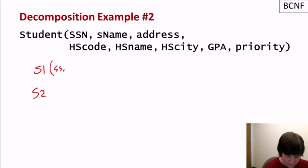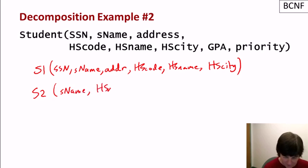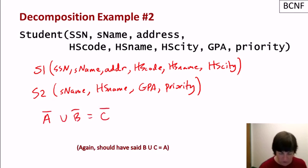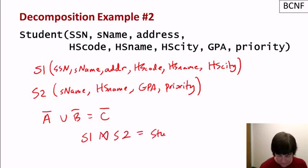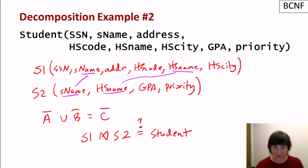Now let's look at a second decomposition: S1 contains SSN, name, address, high school code, high school name, and high school city; S2 contains student name, high school name, GPA, and priority. All attributes are captured, but does S1 join S2 give back student? The answer is no — the join would occur on student name and high school name, which are not unique values. Joining back may produce tuples combining information that doesn't really belong together.